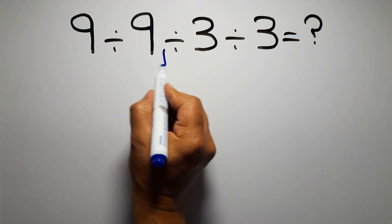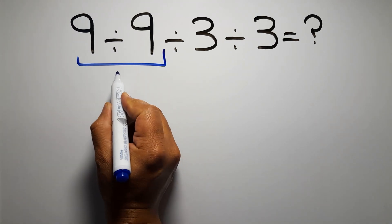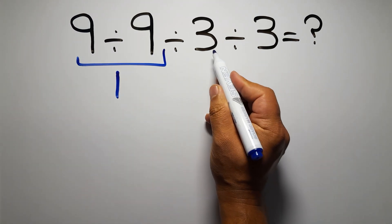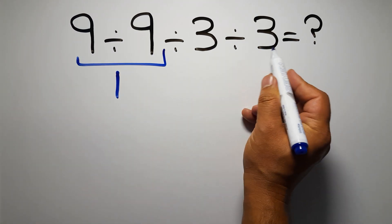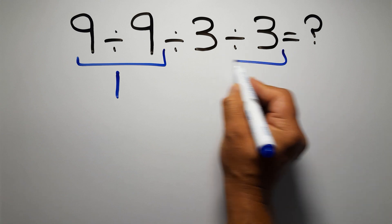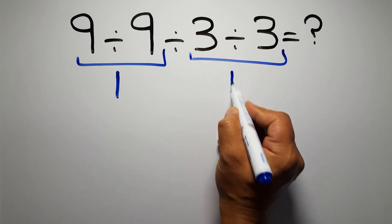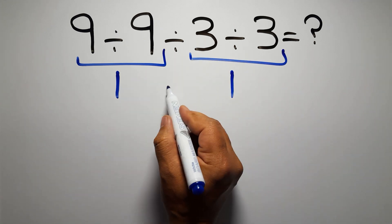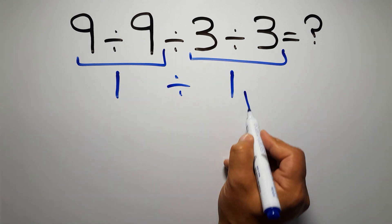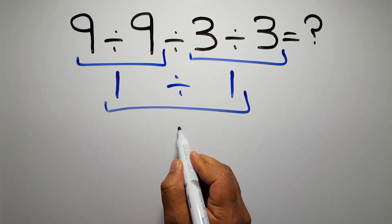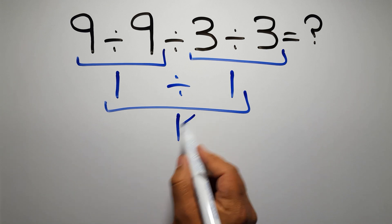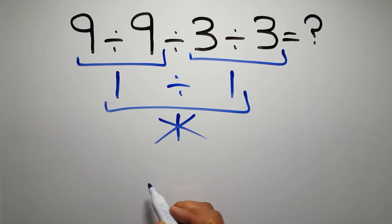9 divided by 9 gives us 1, and here we have 3 divided by 3, which equals 1, so 1 divided by 1 gives us 1. But this answer is not correct.